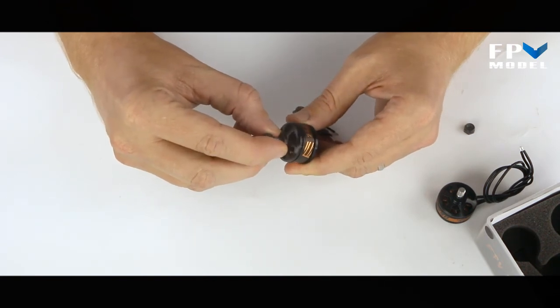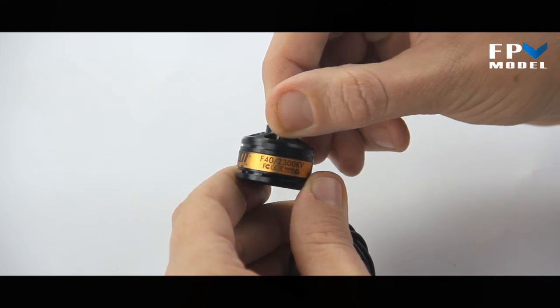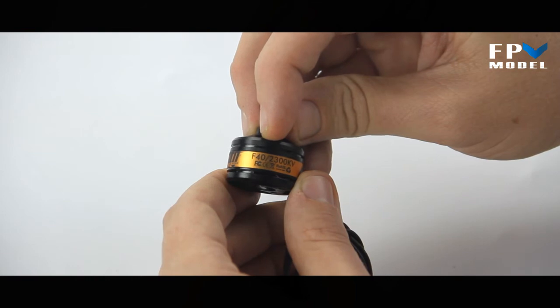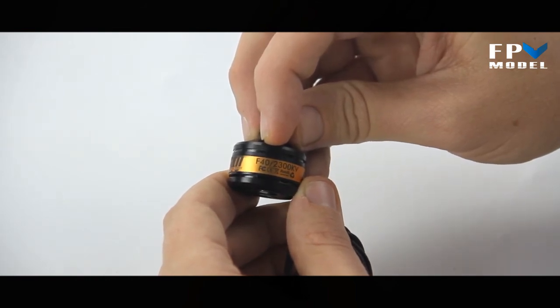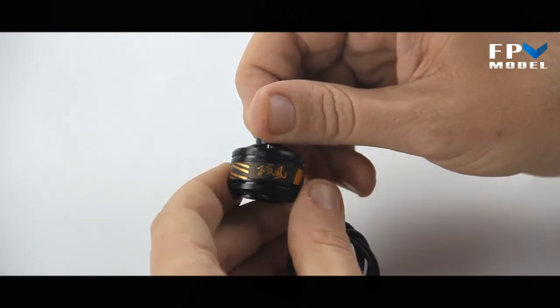So here we go, let's just go ahead and give you a full look at the label here. And like I mentioned, they do say F40 2300 KV, and that's just adding a bit more confusion to the world, so keep in mind that F40 is just 2204.